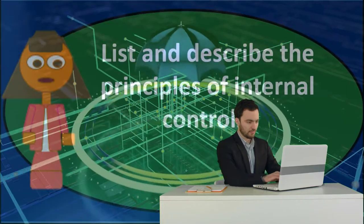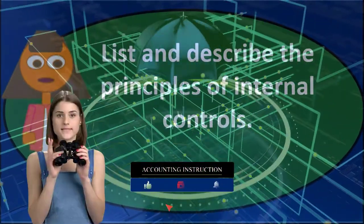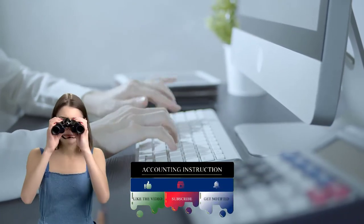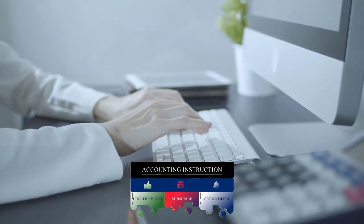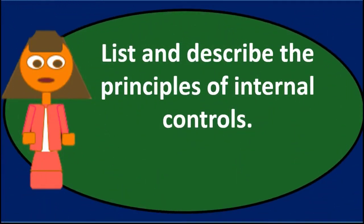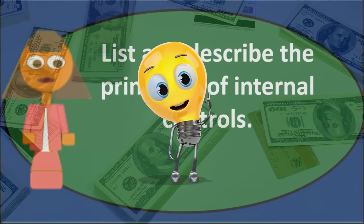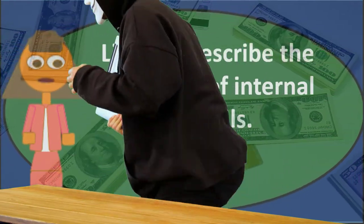The goals of internal controls include things like safeguarding the assets, making sure that we have a system that is set up to be in compliance with policies, regulations, and laws. We want to have a system that's going to promote efficiency within the operations, provide a good paper trail, and result in accurate financial statements. We also want to have controls that are going to reduce the likelihood of fraud.